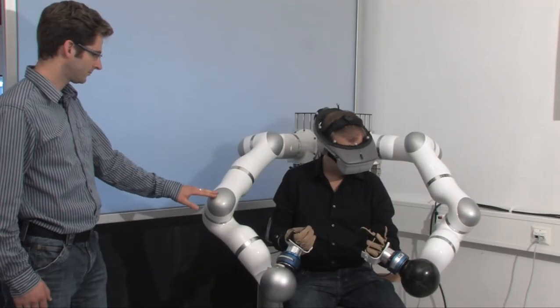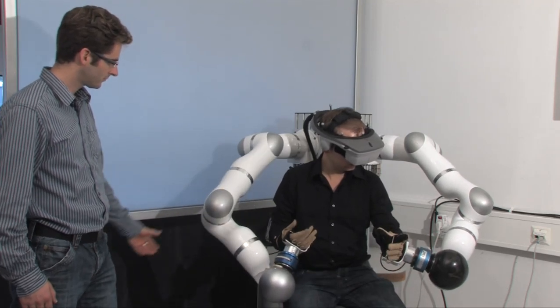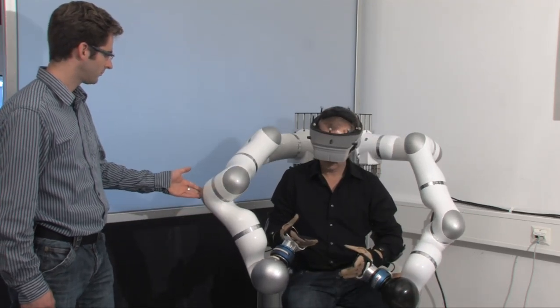The robot elbow can react compliantly to external forces. If no force is applied, the elbow returns to its optimal position.